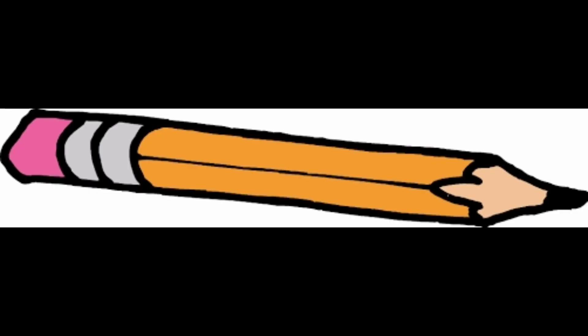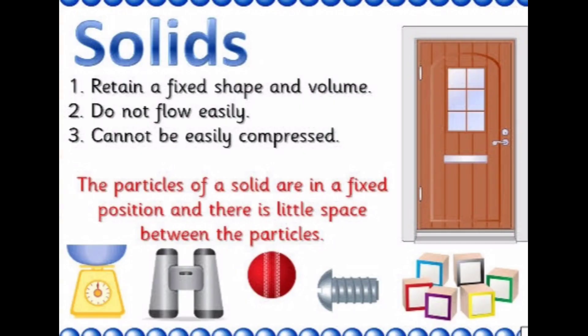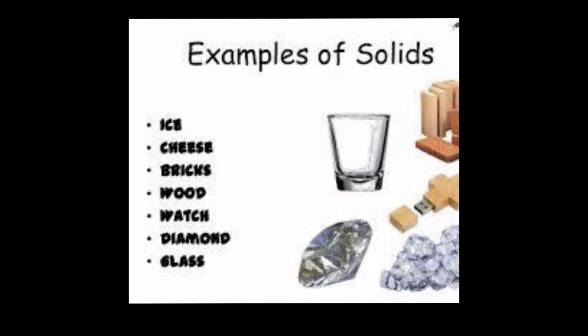First, solid. Press a wooden pencil. Is the pencil hard? Yes or no? Yes. Very good. Solids are things that have a definite shape and volume. They occupy a fixed space. The particles in solids are packed very tightly, so they cannot move freely. Their shape can be changed only when we break or cut them.